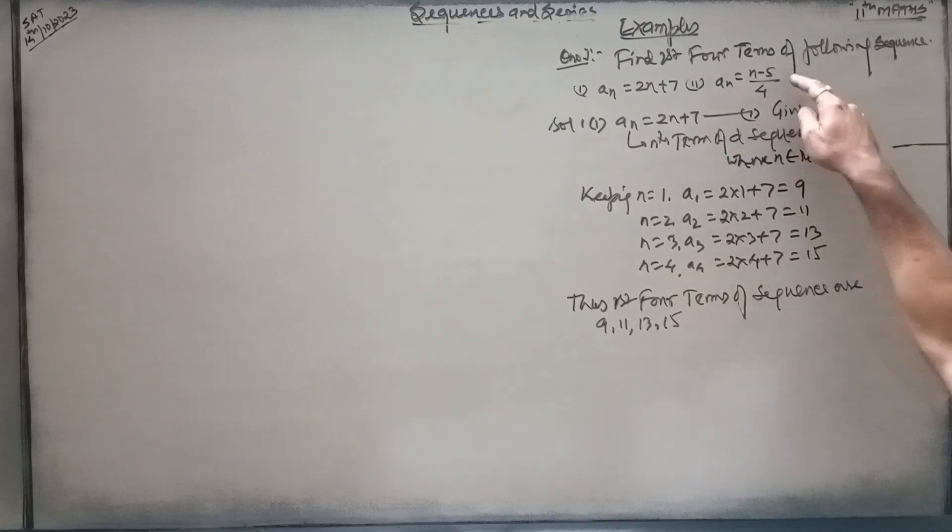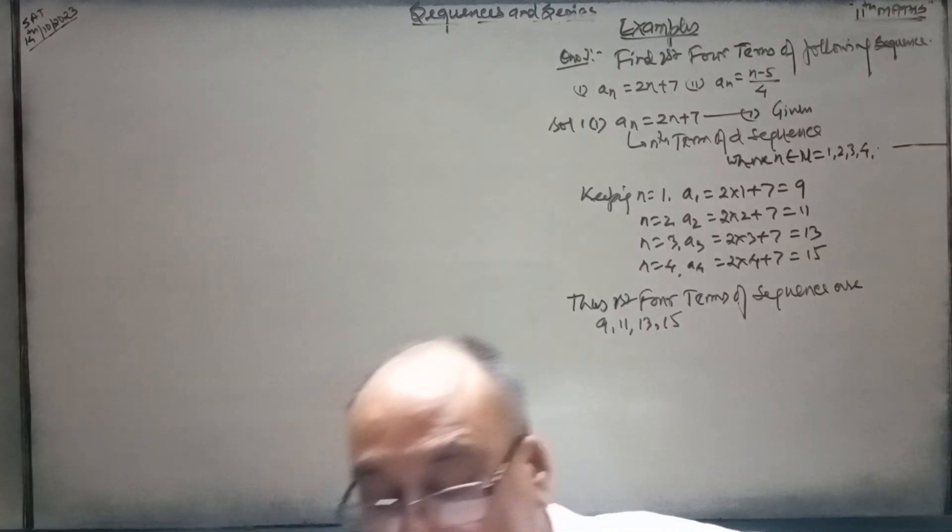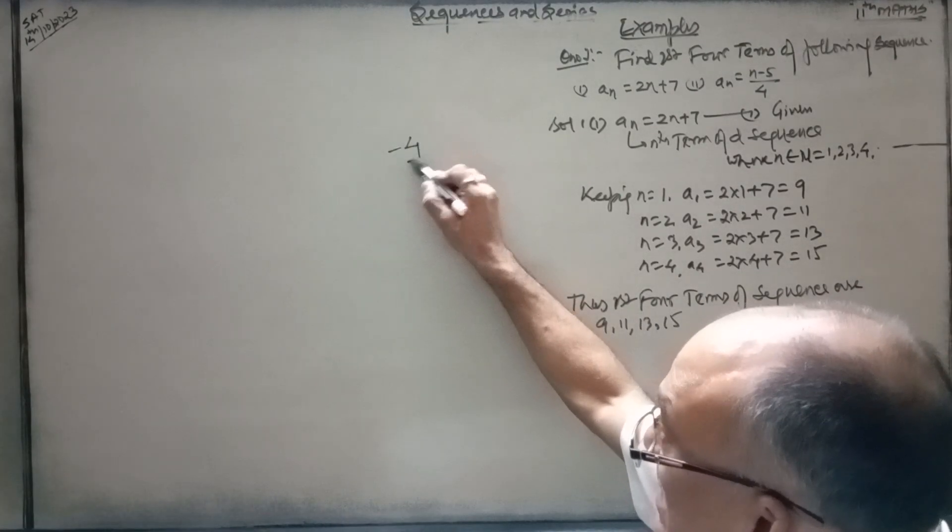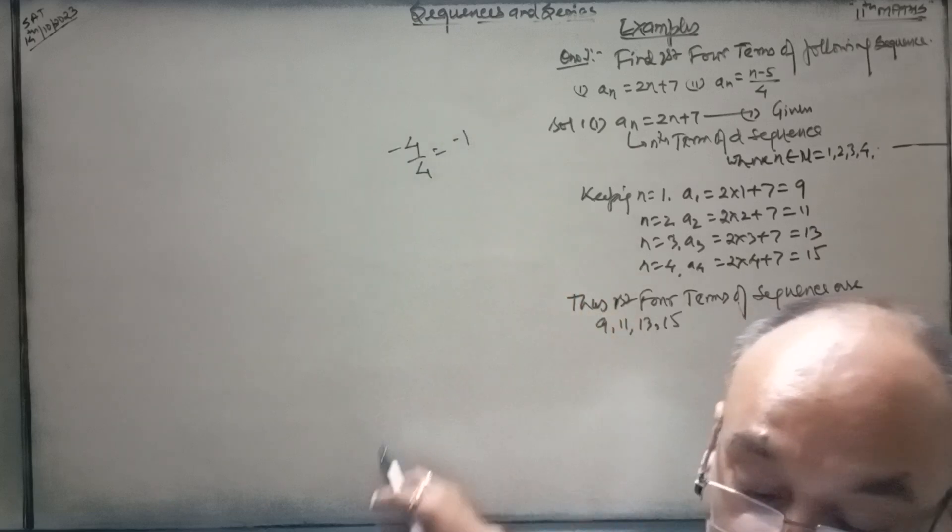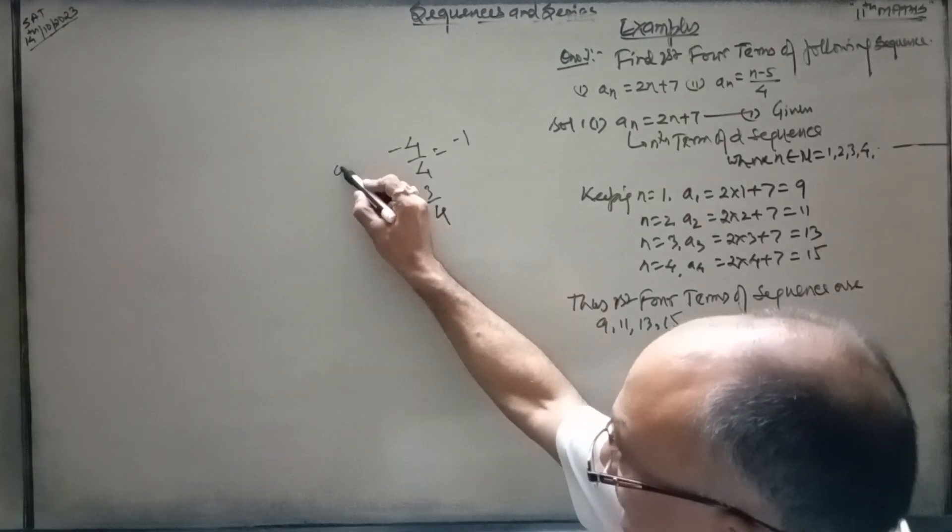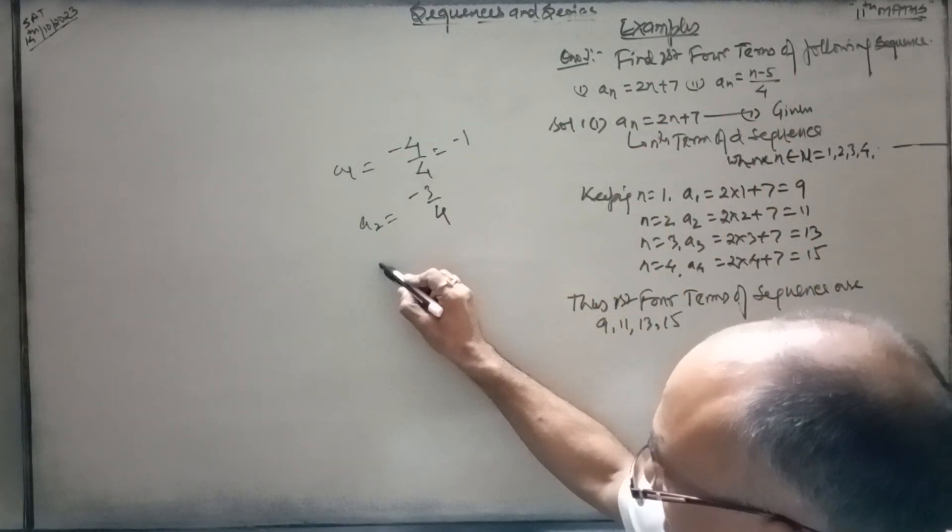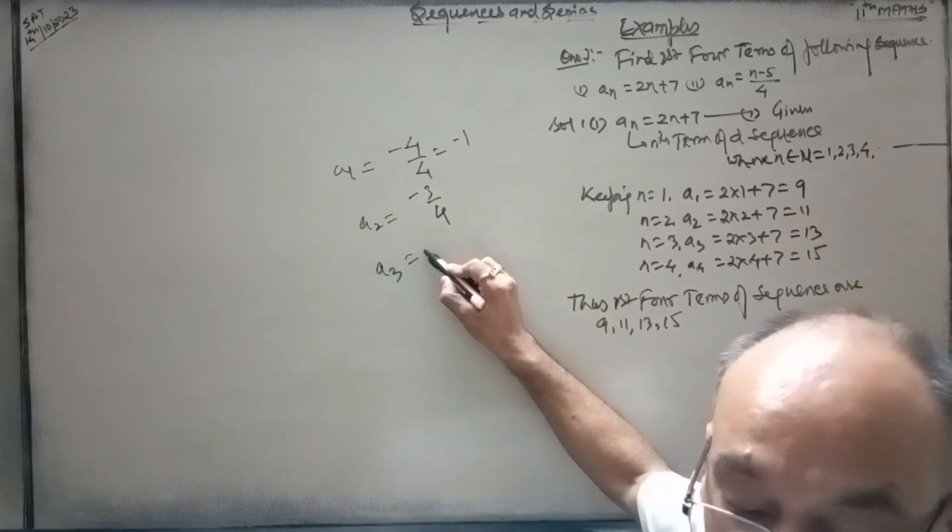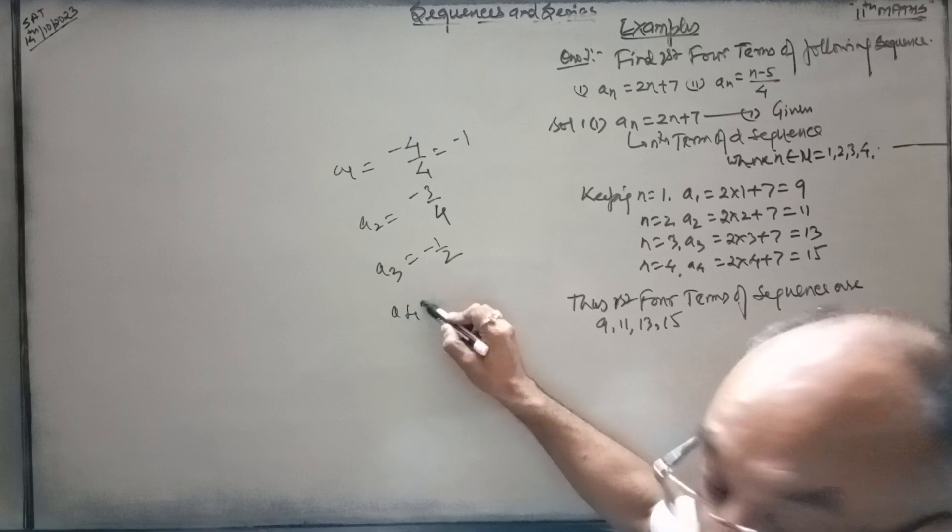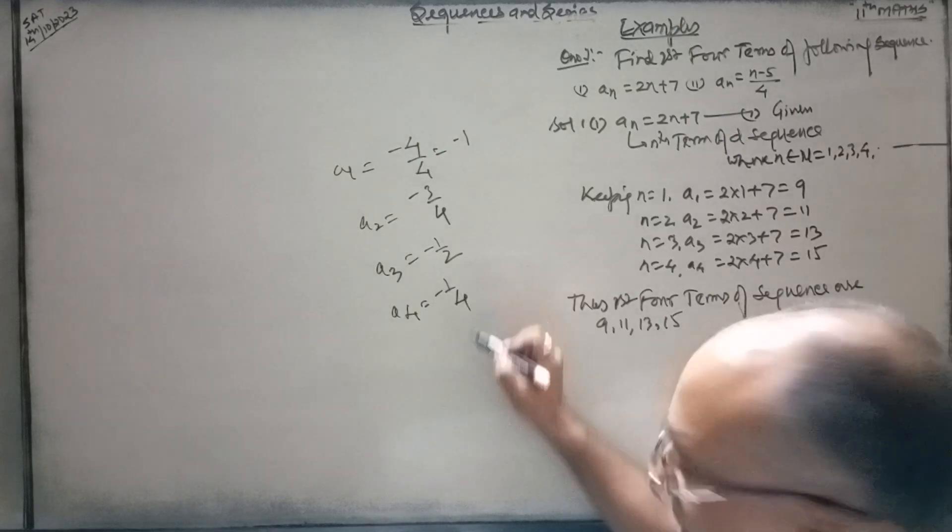Then n is equal to n minus 5 upon 4. What they are coming: minus 4 by 4, minus 3 by 4, minus 2 by 4, minus 1 by 4. Minus 4 by 4 means minus 1. Then minus 3 by 4. This is a1, a2 is this one, a3 is equal to minus 2 by 4, means minus 1 by 2.